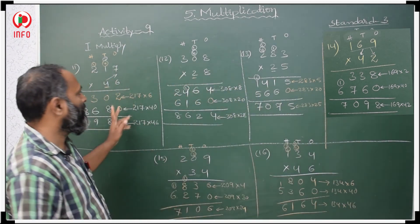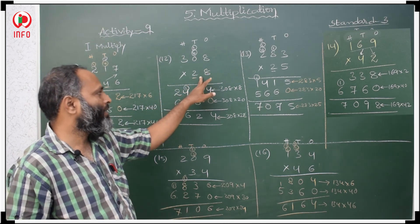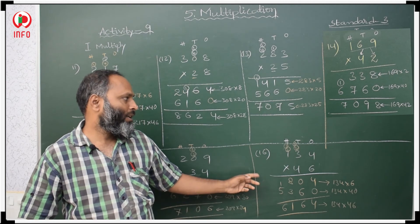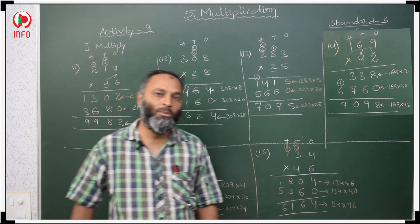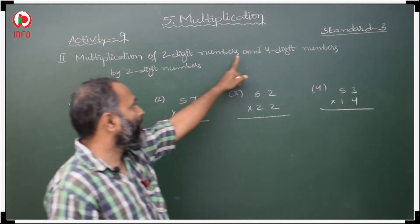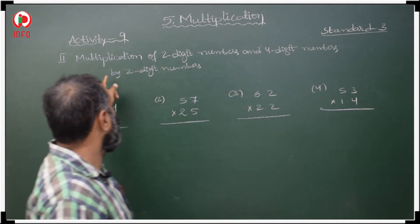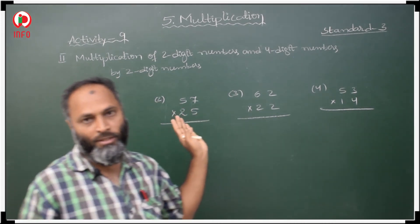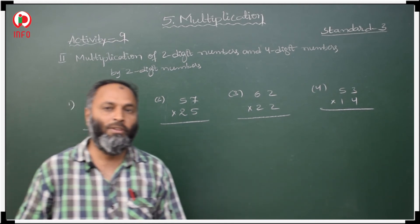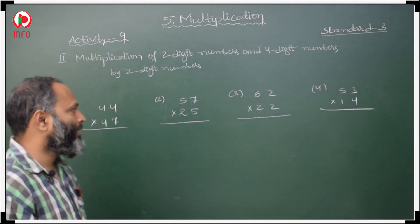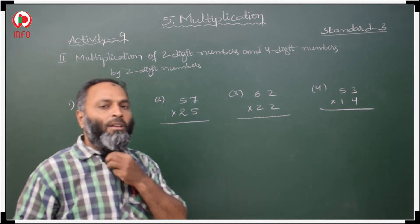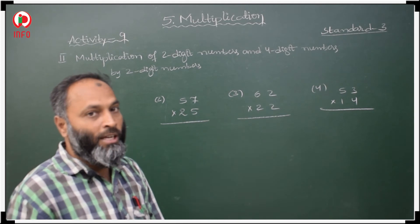So these 3-digit sums were given and we are multiplying with 2-digit numbers. More 4 questions were there, and that you do as your home assignment. Now multiplication of 2-digit numbers and 3-digit numbers by a 2-digit number — we did this. Nearly 10 to 15 questions we did already. So 2-digit number with a 2-digit number — again here 5 questions are given, 4 questions we are going to do, and more 1 question is there that you do as your home assignment.